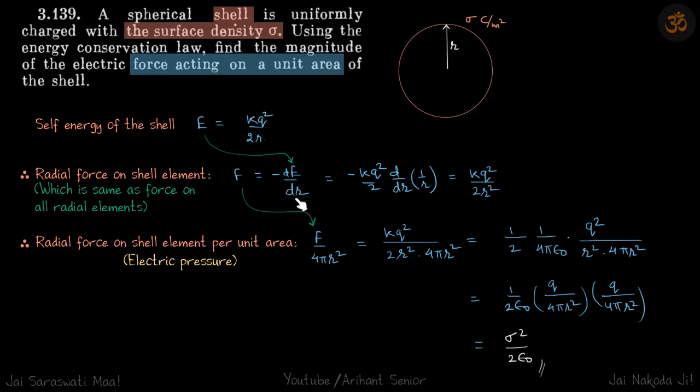So force is minus dE by dr. So if you do that, you will get minus kQ squared by 2, d by dr of 1 by r, which will be minus 1 by r squared. Minus minus becomes positive. It will be kQ squared by 2R squared.